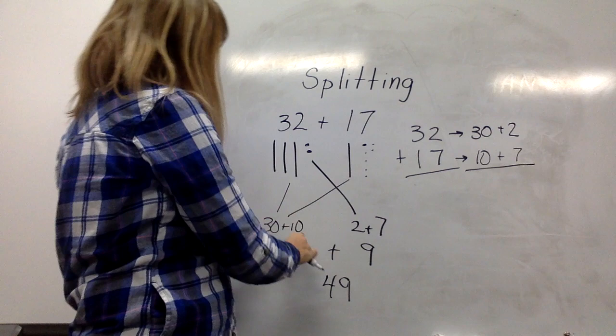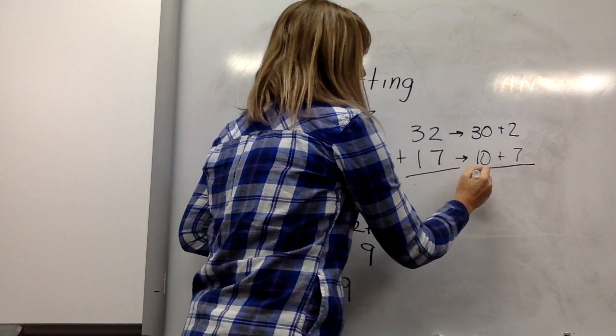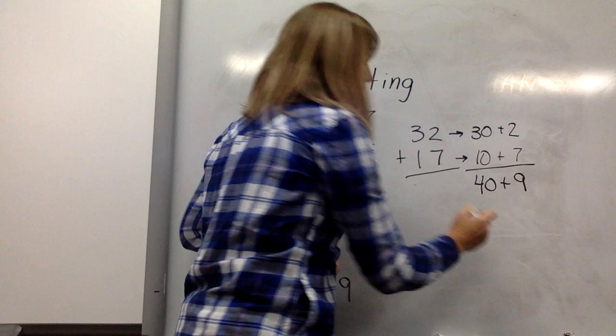In the same way that we added our tens and ones separately, we're going to split them here. 30 and 10 is 40, 2 and 7 is 9, which gives us 49.